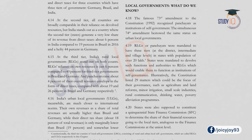Hello and welcome to StudyIQ. In this lecture, we will continue our discussion on the Economic Survey Chapter 4 Volume 1. The chapter is about Reconciling Fiscal Federalism and Accountability and checks whether there is a low equilibrium trap. Till the last lecture, we covered half of the chapter, and today we will be continuing with the rest. Let us start with Local Self-Governments.